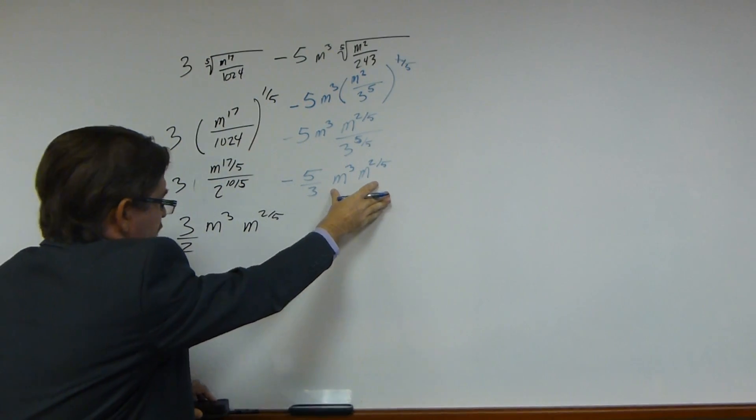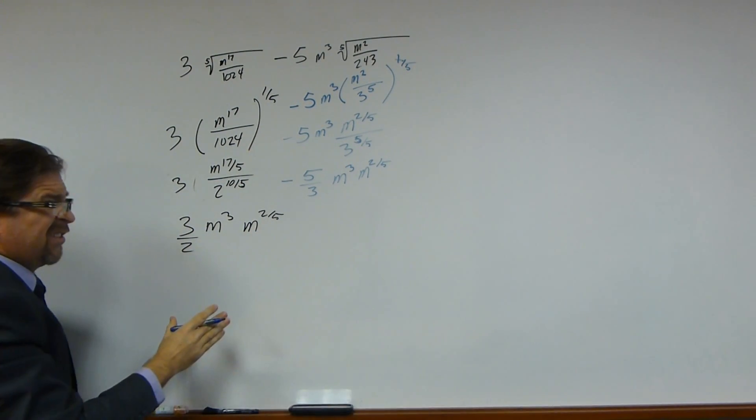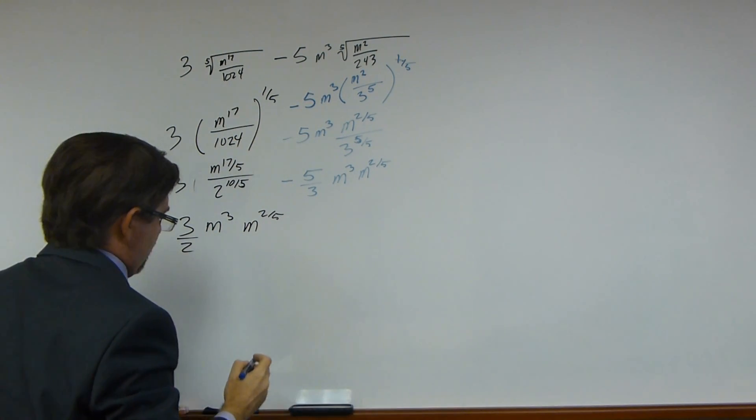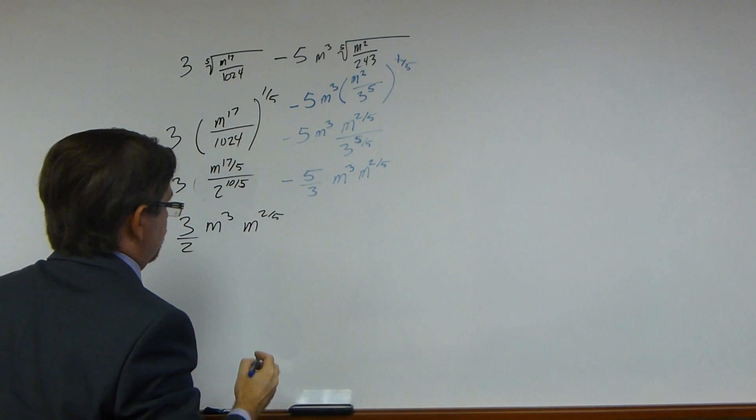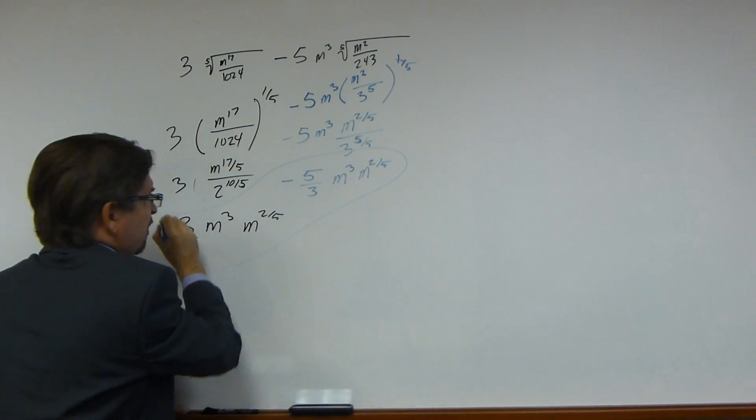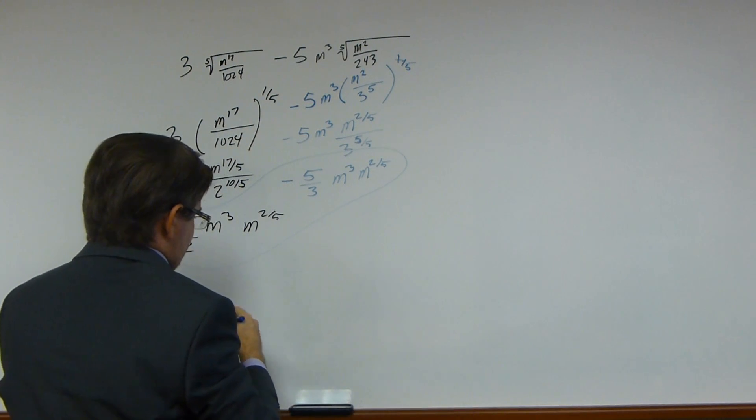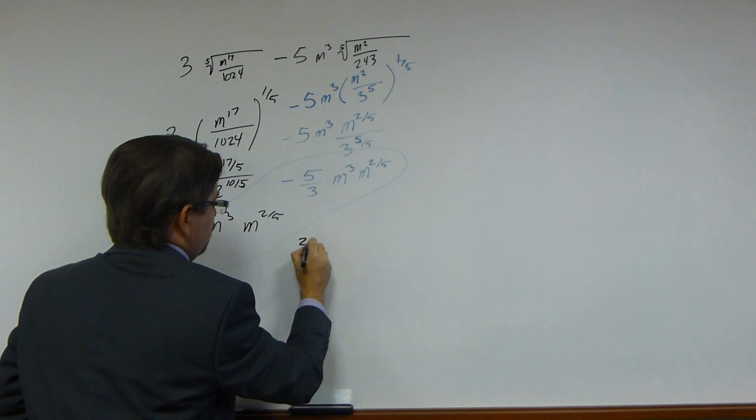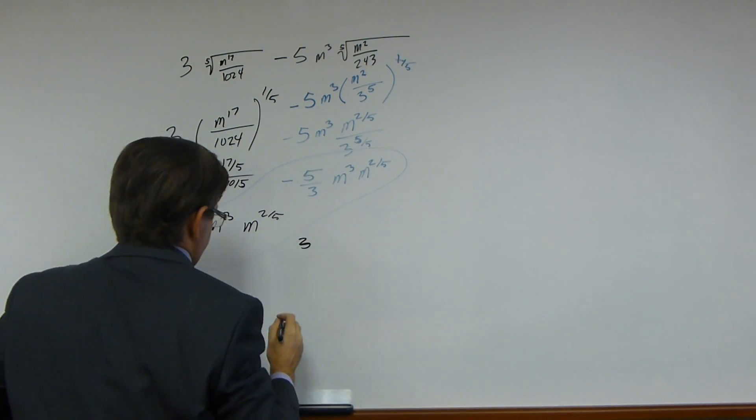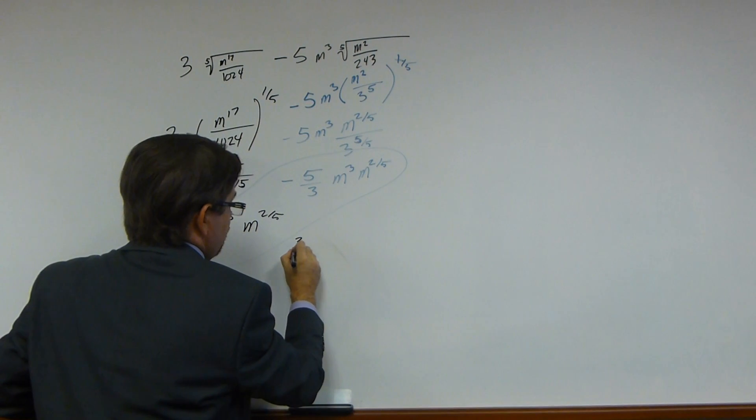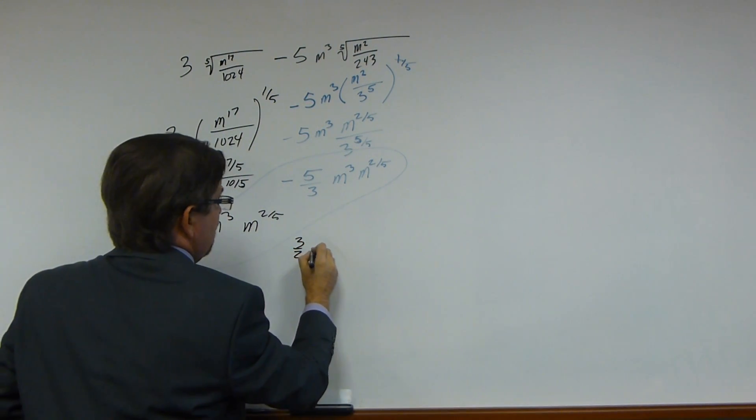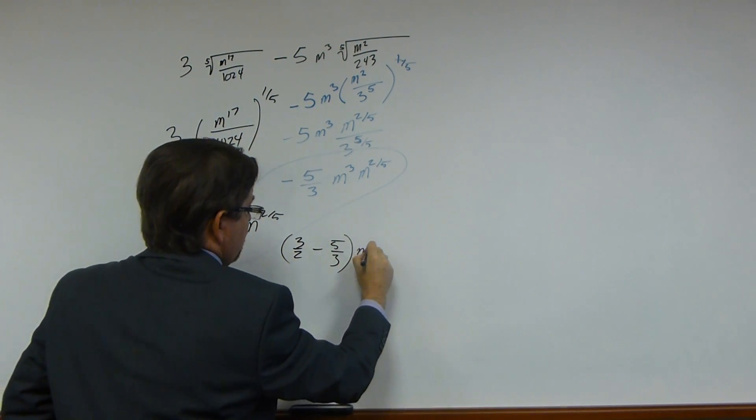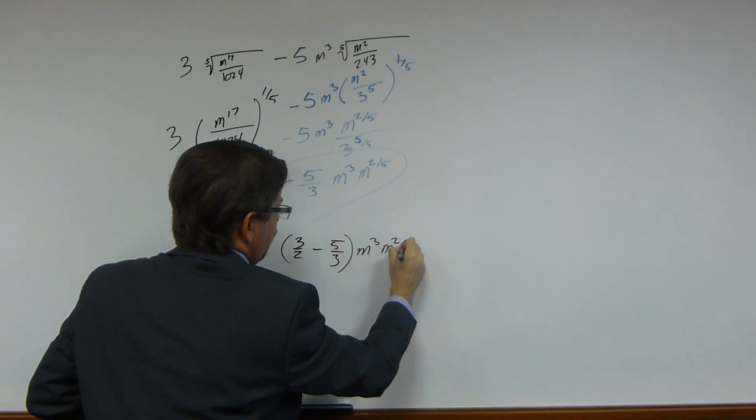This looks very similar to this, because they're the same. Okay, but our cofactors are different. What we have, but this is all the same now. We can write that as 3 over 2 minus 5 over 3, close parentheses, m to the 3, m to the 2 fifths.